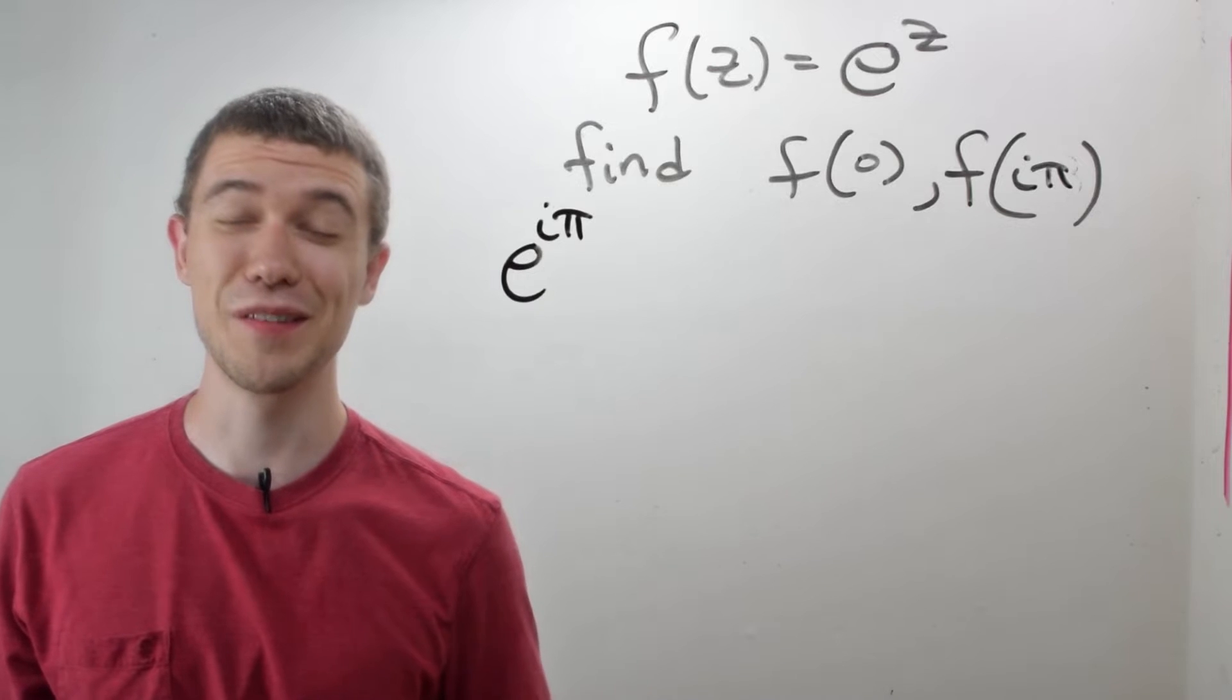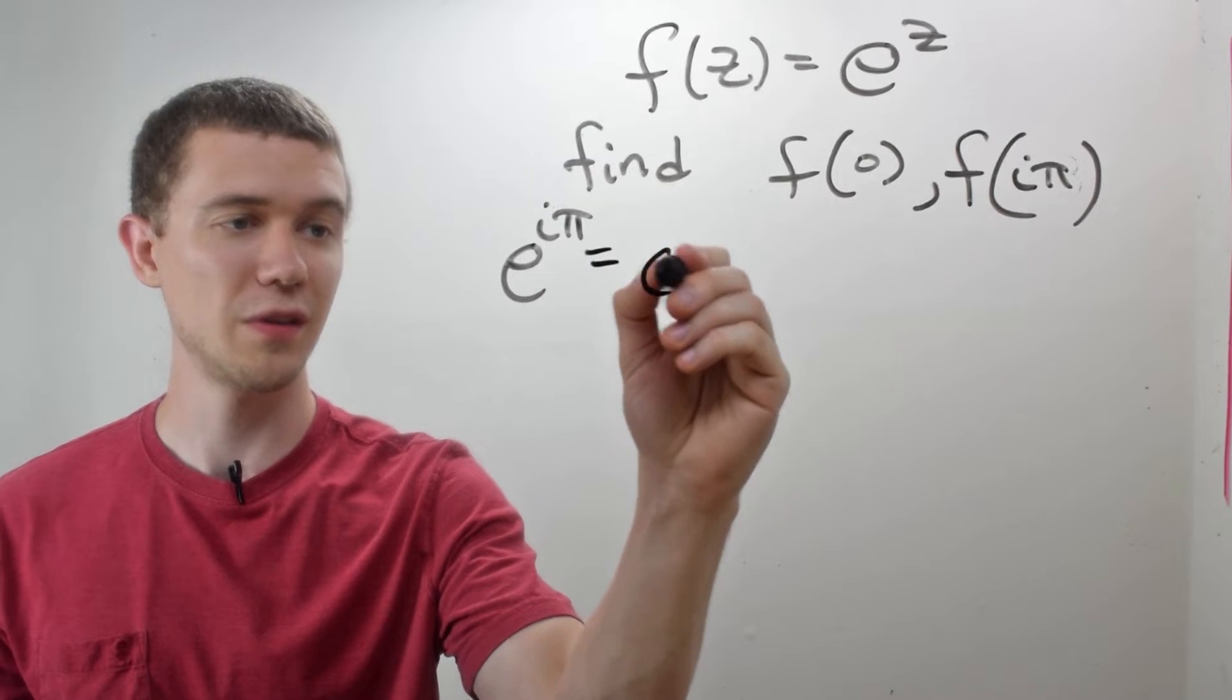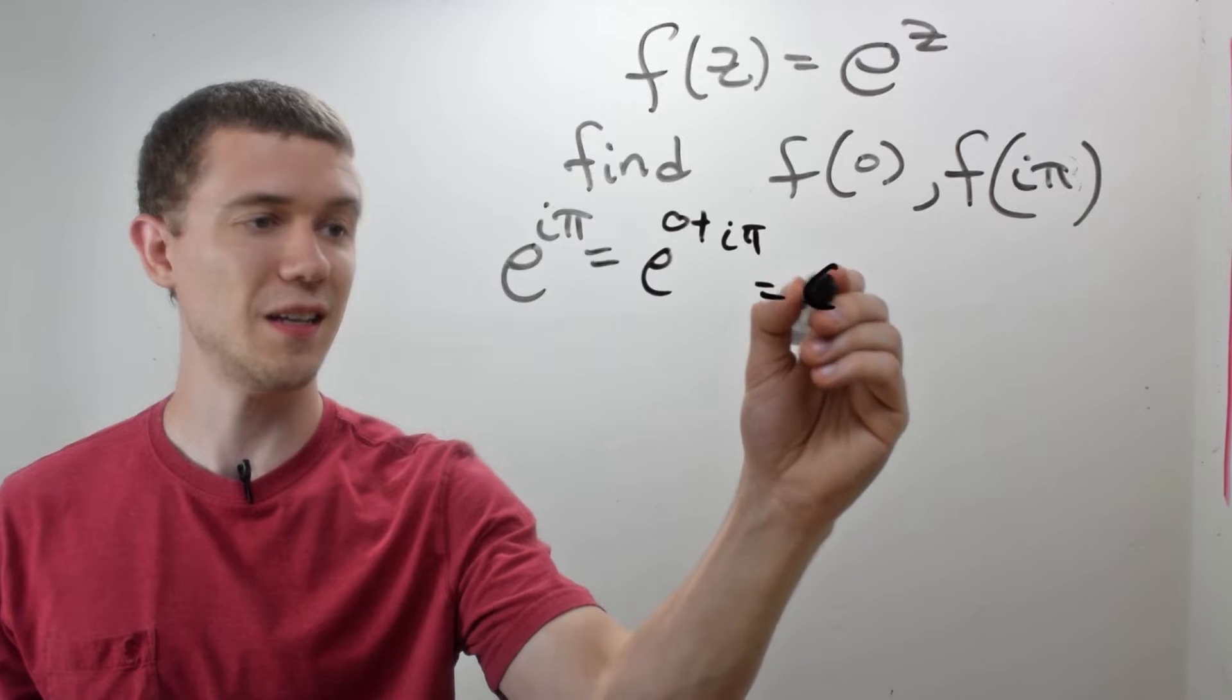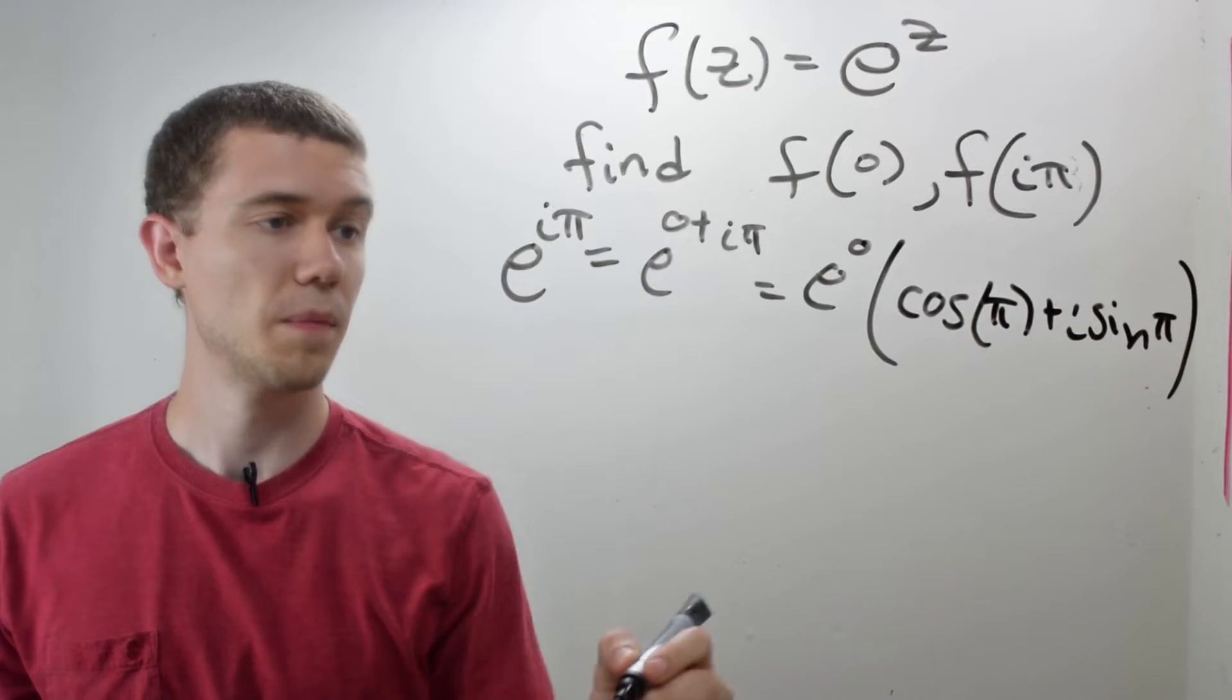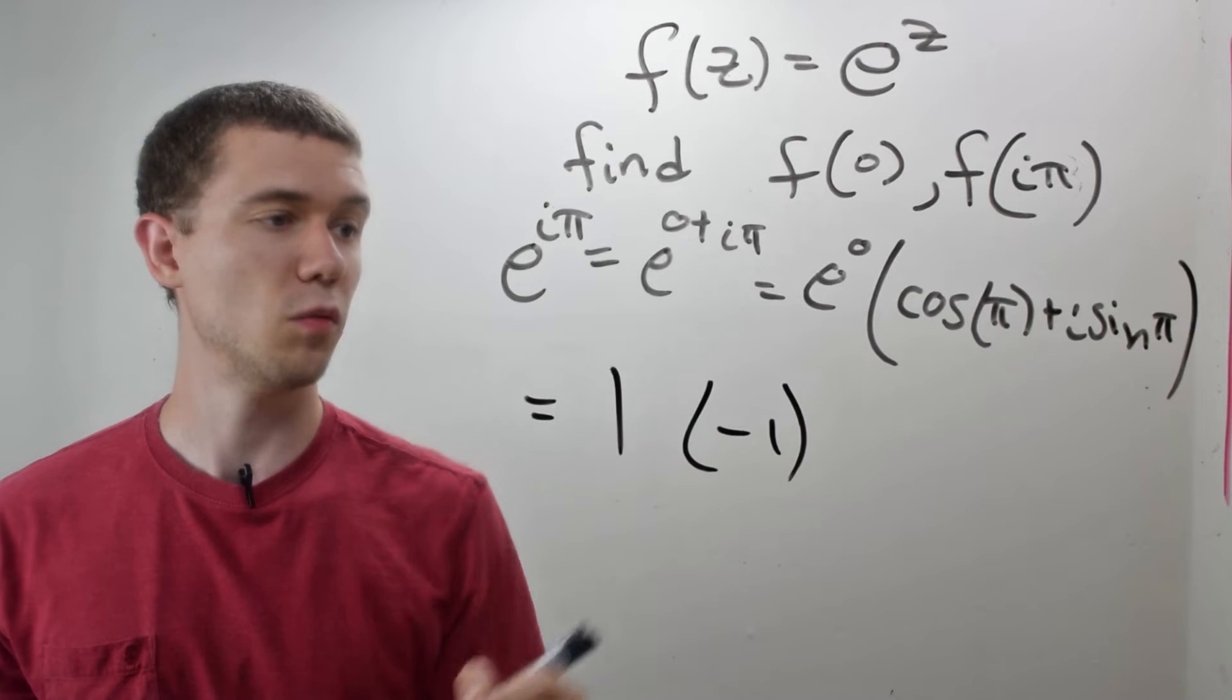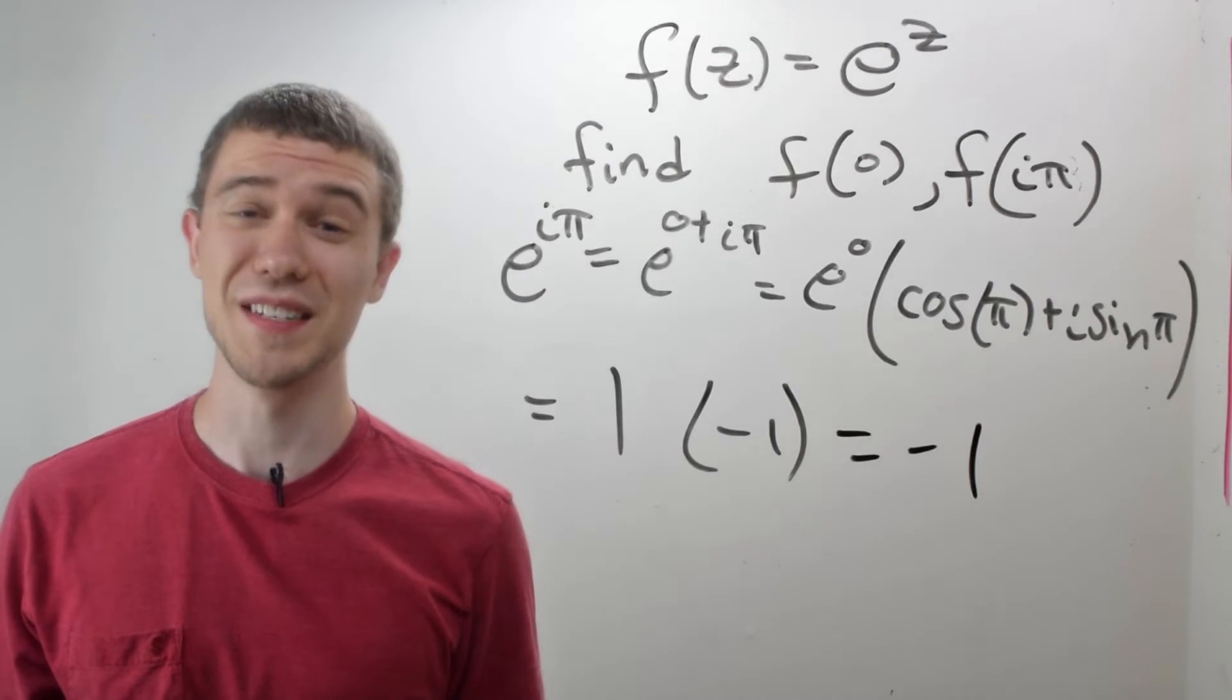Now e to the i pi, that's one of the most famous identities in all mathematics. Let's see why. If I apply this definition, this is really e to the 0 plus i pi, which means this is e to the 0 times cosine of pi plus i sine of pi. Well, e to the 0 is 1, cosine of pi is negative 1, sine of pi is 0, so this is just negative 1. e to the i pi equals negative 1.